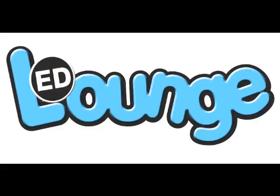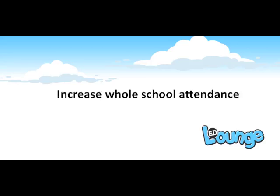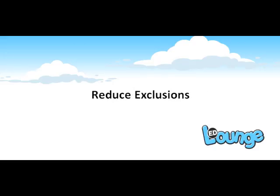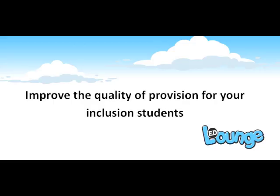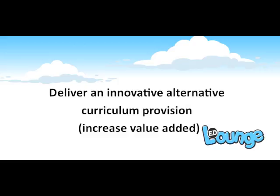Edlounge is an e-learning platform and assessment and qualification portfolio for a range of alternative educational cohort groups. Edlounge has over 5,000 lessons, 250,000 puzzles, all within 30 different subjects. There is an emphasis on the core subjects of maths, English and science. Edlounge also offers qualifications and examinations in vocational and academic subjects to raise attainment and achievement for all.